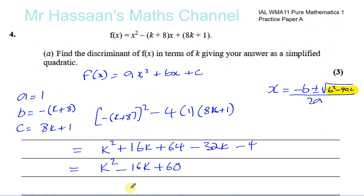That is b squared minus 4ac, the discriminant — it's the part of the quadratic formula under the square root, so it tells us how many solutions there are going to be. If it's positive, there are two solutions; if it's negative, there are no solutions; and if it's equal to zero, there will be only one solution. Now, part b.